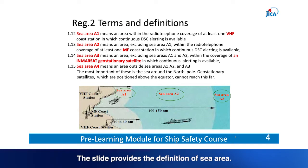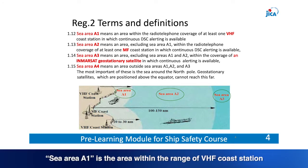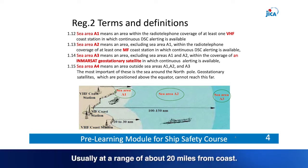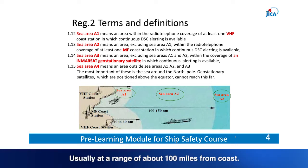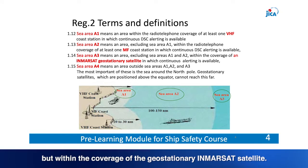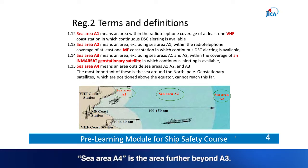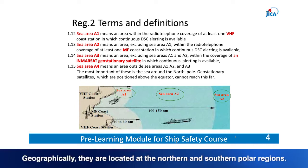The slide provides the definition of sea areas. Sea Area A1 is within the range of VHF Coast Station with continuous DSC alerting available, usually about 20 miles from the coast. Sea Area A2 is beyond A1 but within the range of MF Coast Stations with continuous DSC alerting, usually about 100 miles from coast. Sea Area A3 is beyond A2 but within the coverage of the geostationary InMarSat satellite. Sea Area A4 is the area beyond A3, geographically located at the northern and southern polar regions.